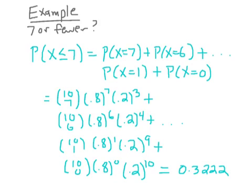The example I did in the previous slides was exactly 7. Now I want to consider the question, what if you want to figure out the probability that this basketball player makes 7 or fewer?